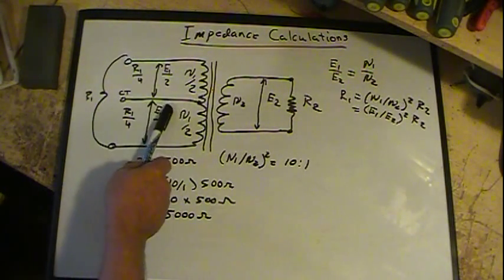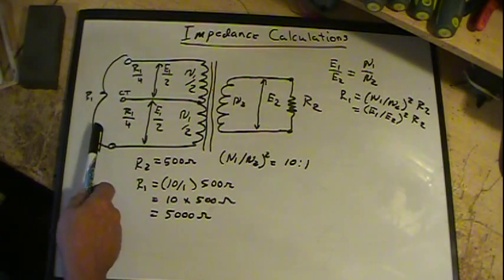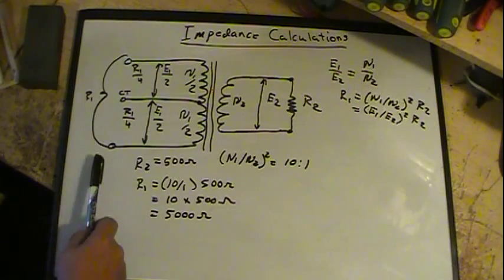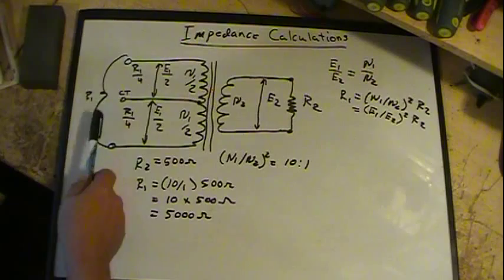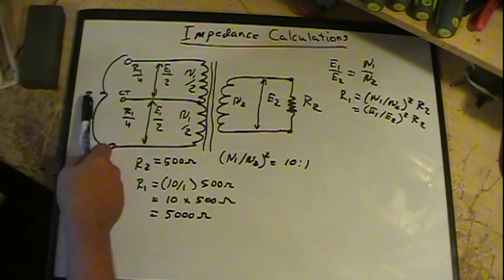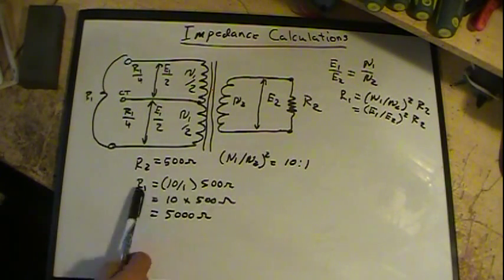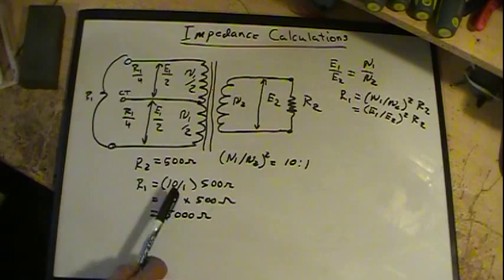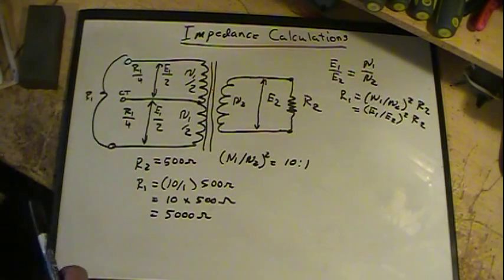Now you may have a center tap here. And in that case, that would be like for a push-pull tube. You'd have a plate hooked here and a plate hooked here, and this would hook to B+. In that case, then it works out to R1 over 4 and R1 over 4 here. So then this value would be a little bit different. It would be divided by 4 on these two legs going to each one of the tubes.